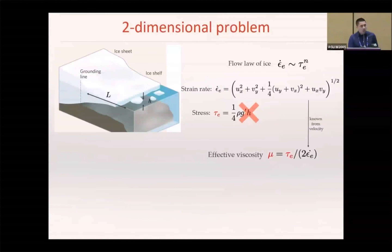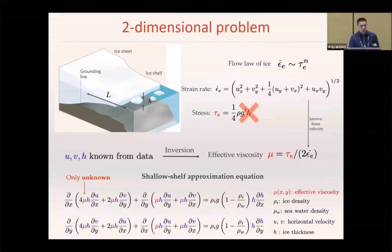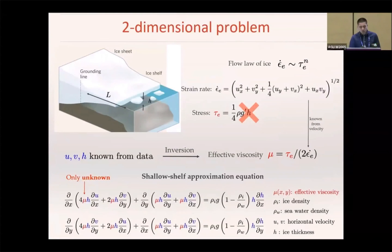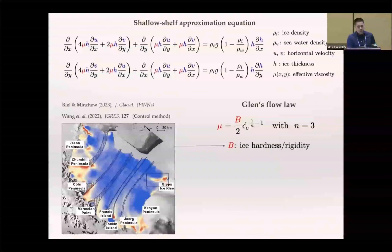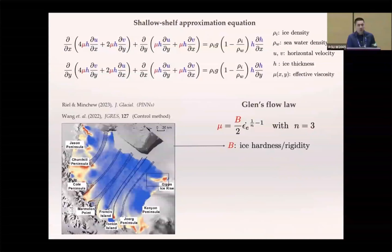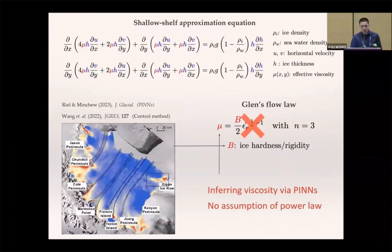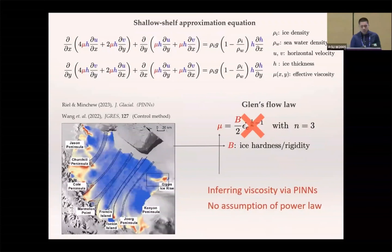To solve these problems, an alternative way is to infer the ice viscosity directly. With remote sensing data, viscosity becomes the only unknown in the equation, which can be solved as an inverse problem. Prior inversion studies using different methods tend to infer the ice hardness in the Glen's Flow law. But here, we aim to infer the viscosity using PINNs directly, avoiding any assumptions of power law dependence and allowing data-driven discovery of the actual viscosity model.